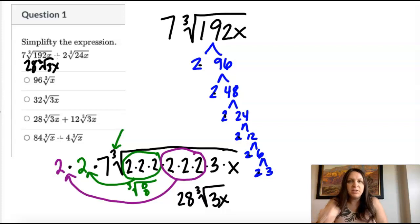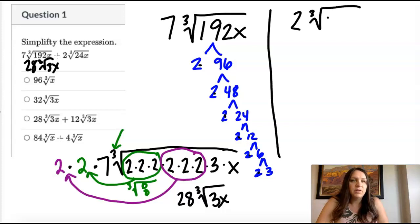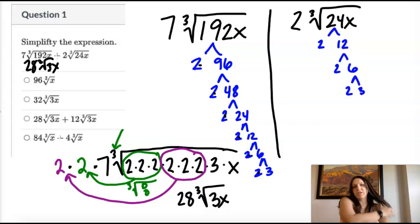And now I'm going to do the same thing with the second one. Now I have two cube root of 24x. And I'm going to do the same process. I'm going to find the factors. So two times 12 is 24. Two times six is 12. Two times three is six. So that's all factored down.